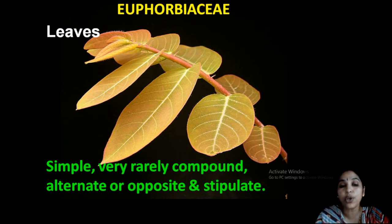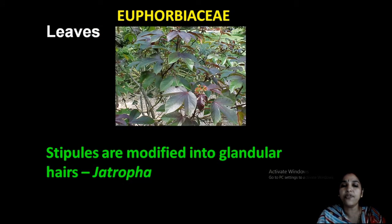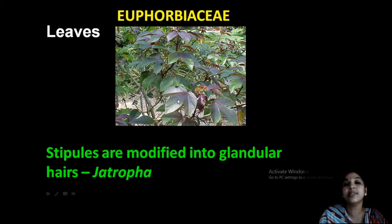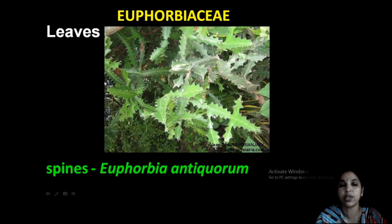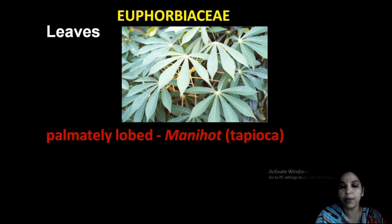Leaves are simple, or usually rarely compound — but most are simple leaves. Leaves are alternate and stipulate; stipules may be present. Leaves of some are modified — the stipules are modified into glandular hairs, as in Jatropha. In Euphorbia antiquorum, leaves are modified into spines — this is a common plant.